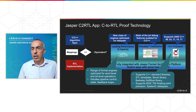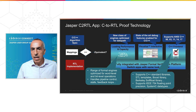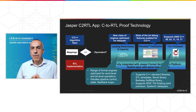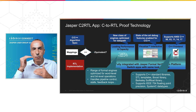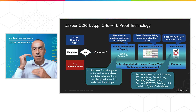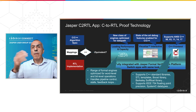The language support includes C++ 98, 11, 14, 17, and the latest variants. It supports libraries including the standard libraries, STL templates, Boost library, Berkeley SoftFloat library, and others. It supports IEEE 754 floating point precision, SystemC data types, and more. Our Jasper C2RTL app is the most comprehensive app to cope with the highly and widely adopted C++ models.